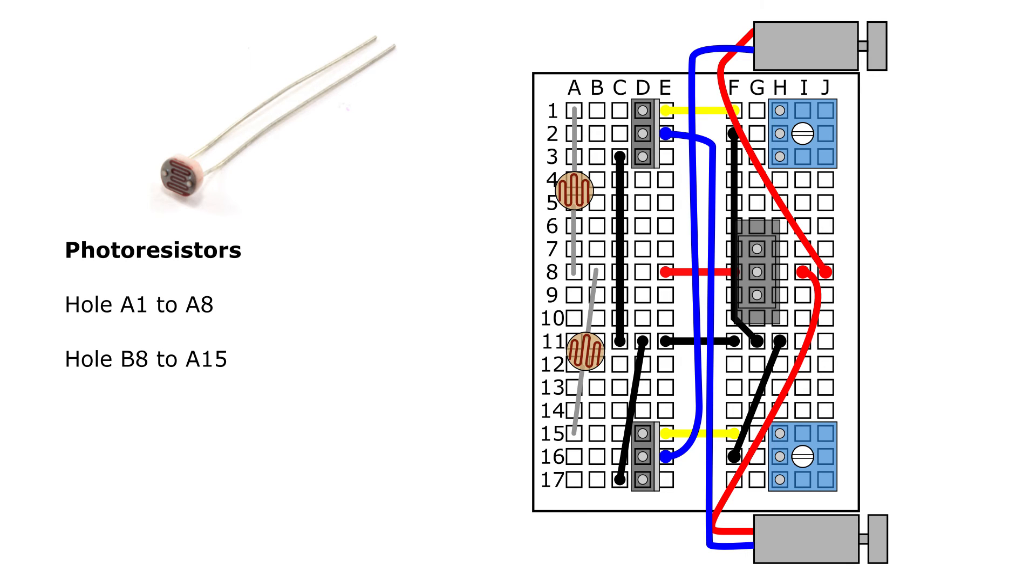You're then going to connect the two photo resistors, which are the light sensors for your robot. So these are what are going to detect the light and allow it to steer right and left. Take one of them and plug it into holes A1 and A8, and the other one to holes B8 and A15.